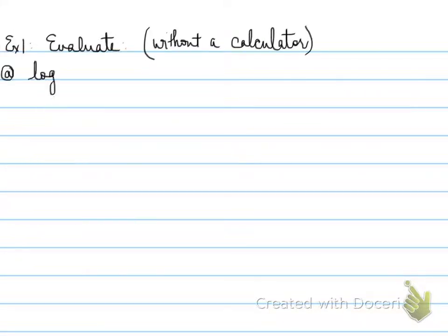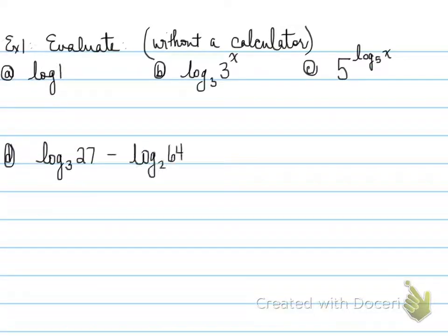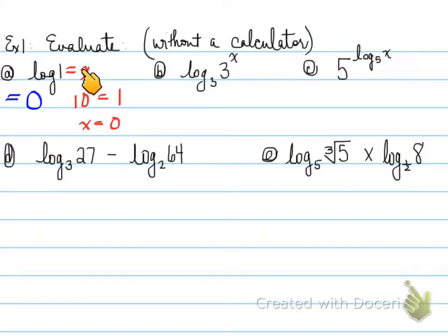Example 1, evaluate without a calculator the following questions. And here they are. Here's a bunch of them. And let's evaluate them. First one, log of base 1. What's the answer? Hopefully, you all think 0. Because, let's show here, if I make log of 1 is equal to X and I convert that to exponential form, it says 10 to the power of X is equal to 1. That means X must equal 0 because 1 is the same as 10 to the power of 0. So the answer to this, automatically, if you see a question like this, is 0.